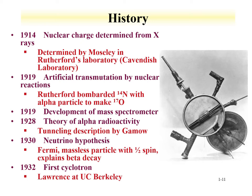In 1928, the theory of alpha radioactivity by Gamow utilized the concept of tunneling through a barrier to describe the decay. In 1930, Enrico Fermi proposed the neutrino hypothesis — a massless particle with a spin of one-half — to explain beta decay. When we discuss beta decay, we'll see the importance of Fermi in understanding it.